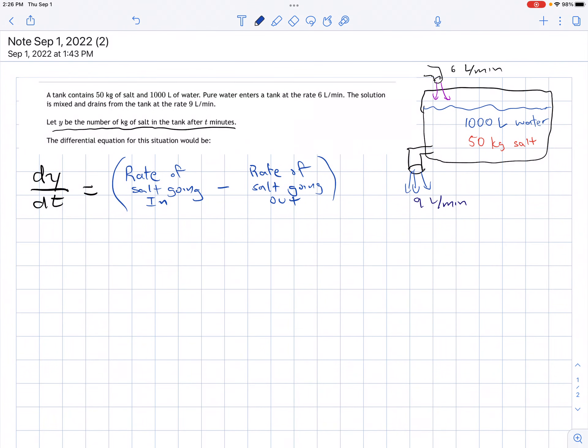In this problem we have a tank with 1000 liters of water and 50 kilograms of salt. There's a mixture of salt and water leaking out at 9 liters per minute, and pure water is going into the tank at 6 liters per minute. We are told y is the number of kilograms of salt in the tank after t minutes.